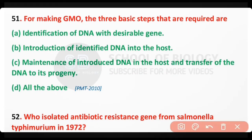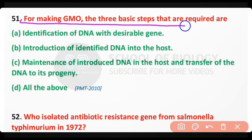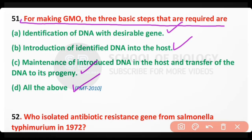Question number 51: For making genetically modified organisms, the three basic steps required are — identification of DNA with desirable genes, introduction of the identified DNA into the host, and maintenance of introduced DNA in the host and transfer of DNA to its progeny. The correct answer is option D — all three steps are required for making genetically modified organisms.